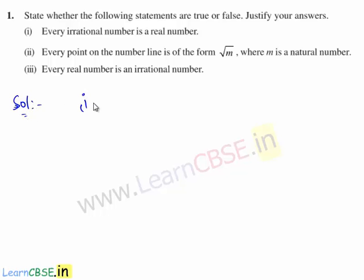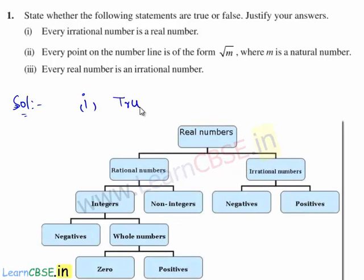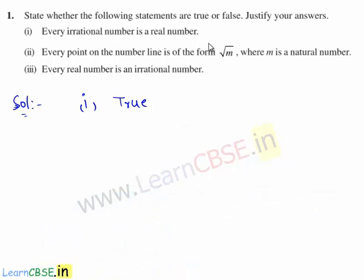We consider the first statement: every irrational number is a real number. The given statement is true, because the real numbers are the set of both rational numbers and irrational numbers. Hence all irrational numbers come under real numbers, and therefore every irrational number is a real number.